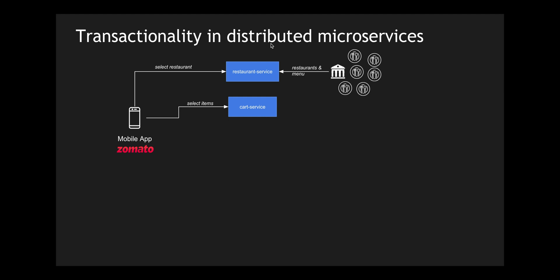This basically means there is a state which is maintained, so the cart service has its own database and the cart information is stored there. Imagine every microservice has its own table in the backend. Once the items are added to the cart, we put in our promo codes and then finally place the order.